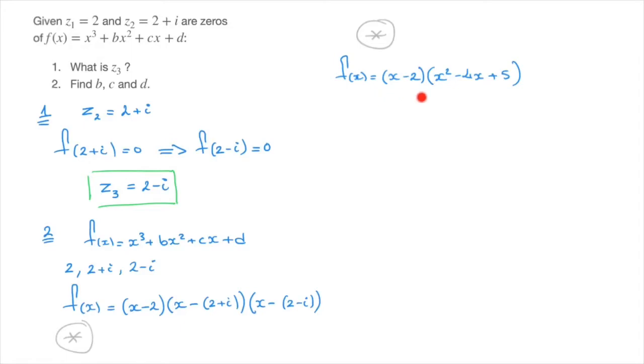Now that that's done, I distribute this first pair of parentheses across the second. And that leads to x cubed minus 4x squared plus 5x minus 2x squared plus 8x minus 10.